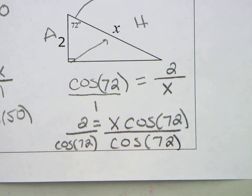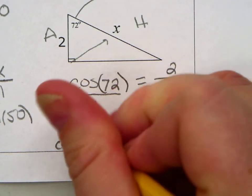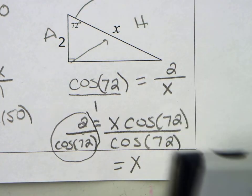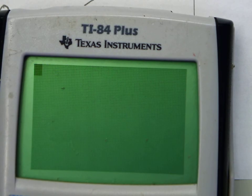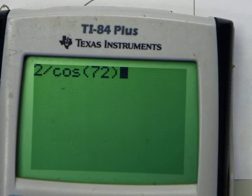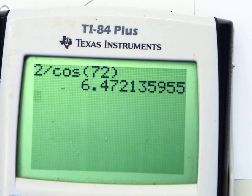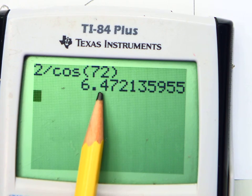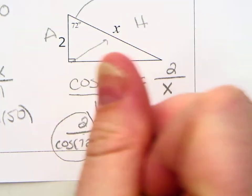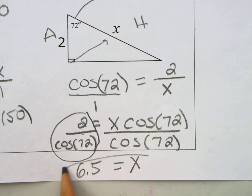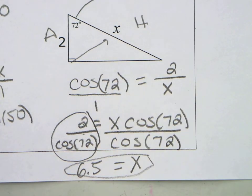So X equals, and then I'm just going to put this in the calculator. Two divided by cosine of 72. Two divided by cosine of 72. Now this is nice. You don't actually have to worry about parentheses or anything on the bottom here. So it's six point, again, round to the nearest tenth, 6.5. Is this 6.5 degrees? No, it's a length. It's the side of the triangle. We're not finding that angle right now. Okay. And we're done.